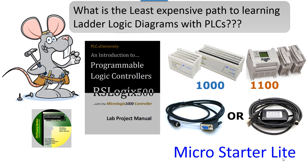Summary of the least expensive path: get a MicroLogix 1100 BBB — a model that uses 24 volts DC — along with either an Ethernet cable or a PMO2 cable, MicroStarter Lite, and a lab project manual.